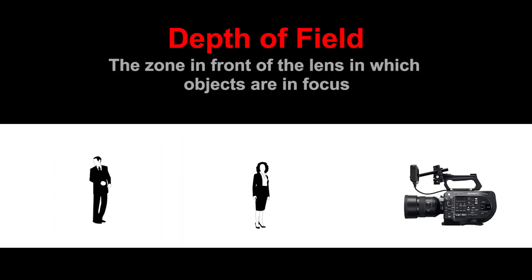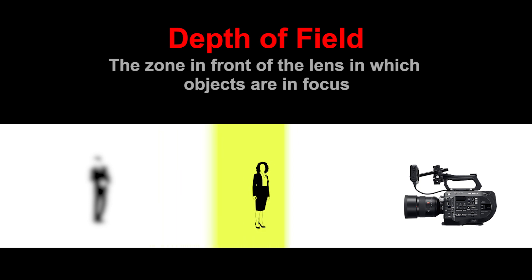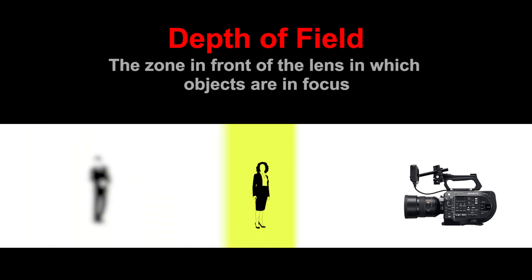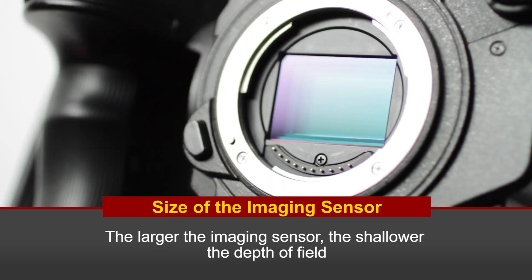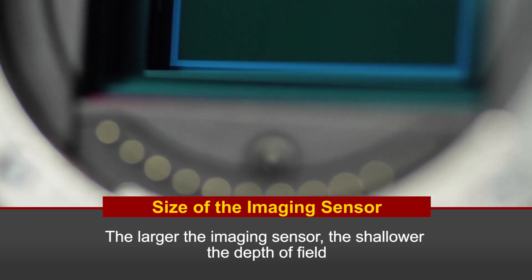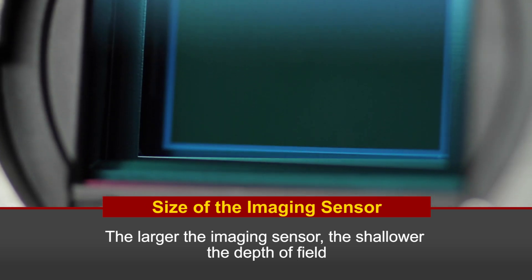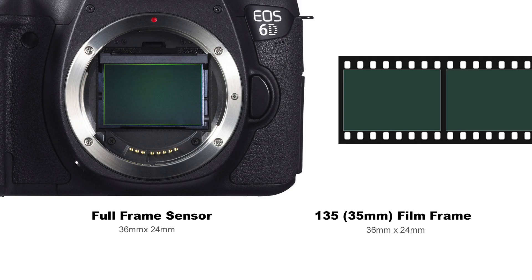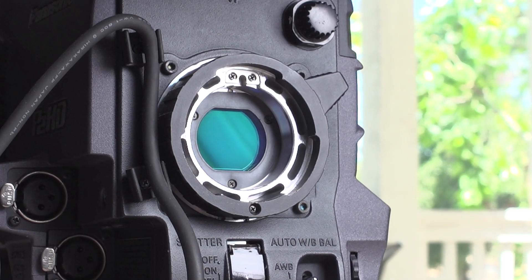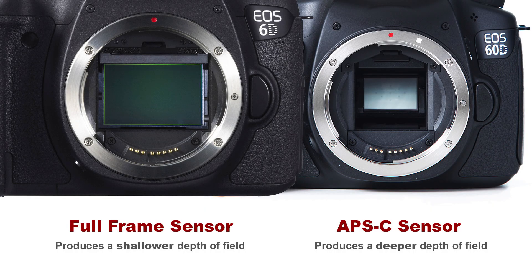We can define the depth of field as the zone in front of the camera lens in which objects are in focus. If an object is inside the depth of field it'll be in focus, but if it falls outside the depth of field it will be out of focus. There are several factors that influence the size of your depth of field. The first is the size of the imaging sensor. The larger the sensor, the shallower a depth of field you can achieve. That's classically why film has always had a more cinematic look than video — a 35mm film frame is much larger than old one-third or two-thirds CCD sensors. For digital cameras, full-frame sensor cameras deliver a shallower depth of field than a smaller APS-C sensor.